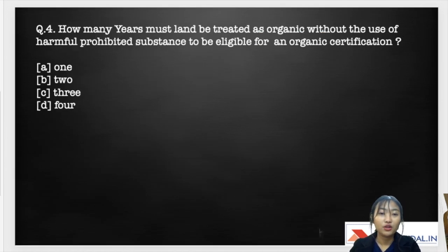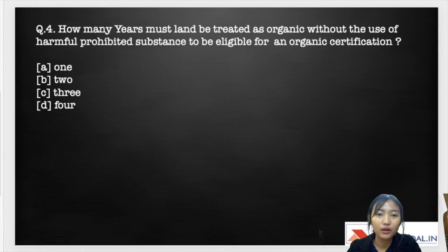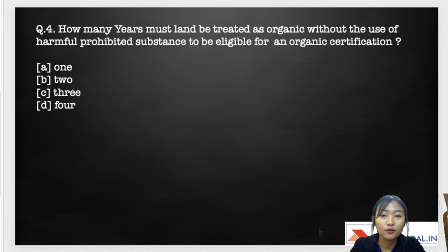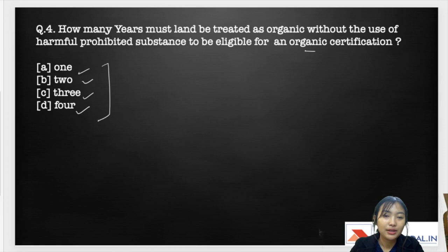For question four, I'd like you to comment your answers in the comments section. The question is related to organic standards: how many years must land be treated as organic, without the use of any harmful prohibited substances, to be eligible for organic certification? The options are: A) 1 year, B) 2 years, C) 3 years, D) 4 years. Please comment your answers.